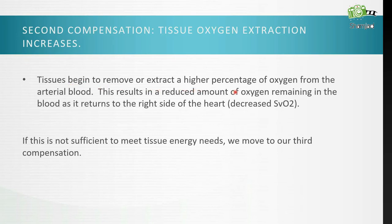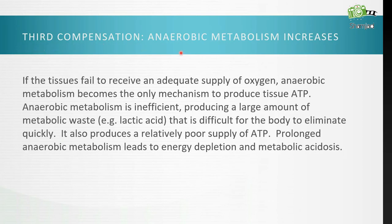Tissues begin to remove or extract a higher percentage of oxygen from the arterial blood. This results in a reduced amount of oxygen remaining in the blood as it returns to the right side of the heart — a decreased SVO2. If this is still not sufficient, we move to the third compensation: anaerobic metabolism increases. If tissues fail to receive adequate oxygen, anaerobic metabolism becomes the only mechanism to produce ATP. It is inefficient, producing a large amount of metabolic waste — lactic acid — that is difficult for the body to eliminate quickly. It also produces relatively poor ATP supply, and prolonged anaerobic metabolism leads to energy depletion and metabolic acidosis.